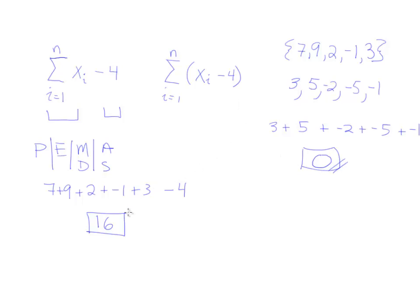So this one produces an answer of 0. This one produces an answer of 16. And the difference, again, is the parentheses. Here the parentheses joins the subtract 4 to each x value, where here this is just separate from the summation symbol, and it's done only at the end. So you have to pay attention to the parentheses.